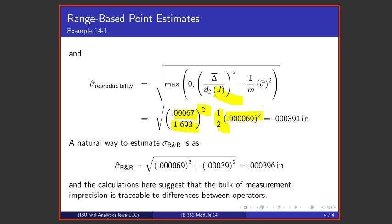That difference is positive so we don't have to worry about this negative value underneath the square root, and so we simply take the square root and we get 0.000391. That is a reproducibility standard deviation.